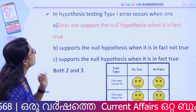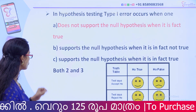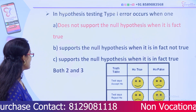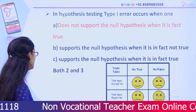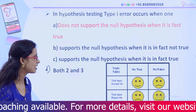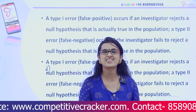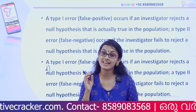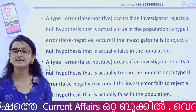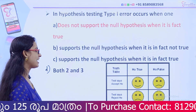In hypothesis testing, Type 1 error occurs when: Option A, you do not support the null hypothesis when it is in fact true; Option B, you support the null hypothesis when it is in fact not true; Option C, supports the null hypothesis when it is in fact true; Option D, both two and three. Type 1 error is when the null hypothesis H0 is actually correct, but we reject it — that is the Type 1 error.